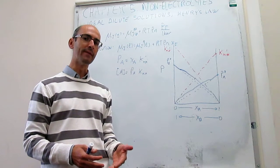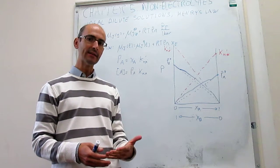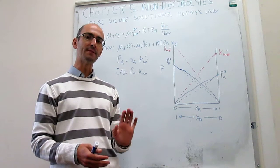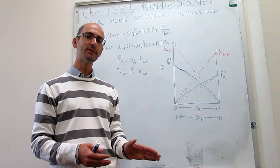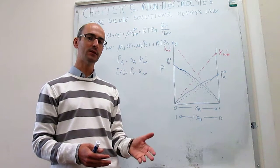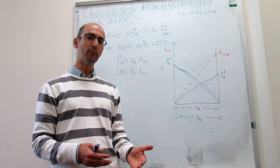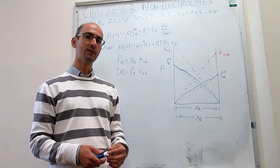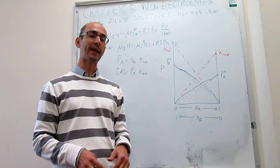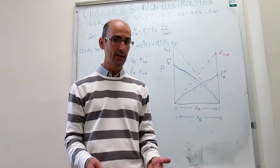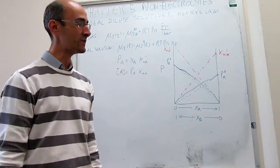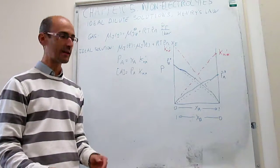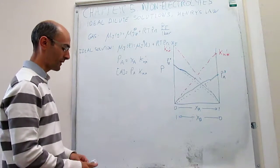An ideal dilute solution is one in which the component that is the majority — the solvent — follows Raoult's law, and the component that is the minority — the solute — follows Henry's law. When you're in those situations, you can actually write the chemical potentials right away.